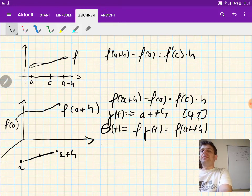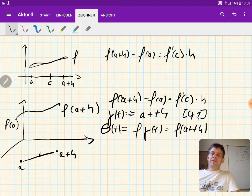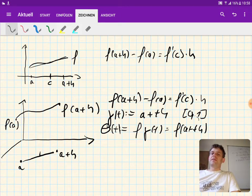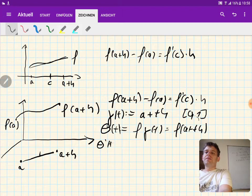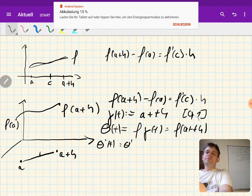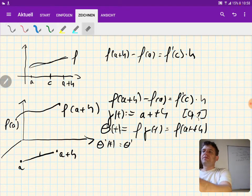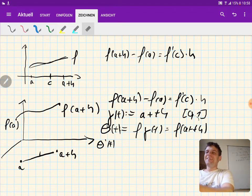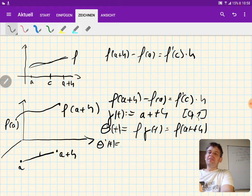And we can look at the derivative of this function using the multivariable version of the chain rule. So the derivative of this function is, by the chain rule, the derivative of f—I got distracted by this stupid message from my tablet—so the derivative is the derivative of f